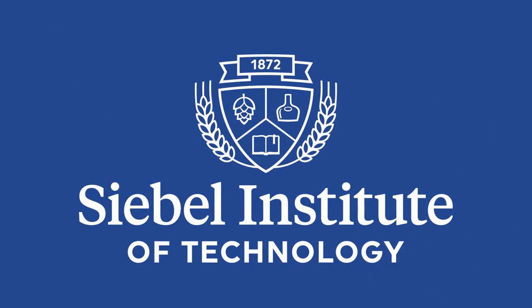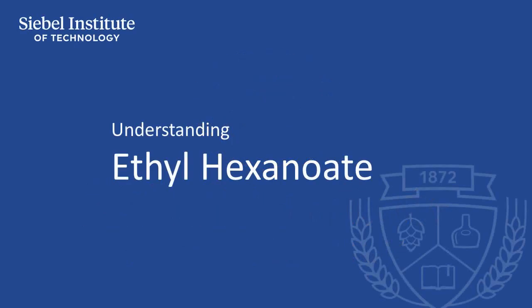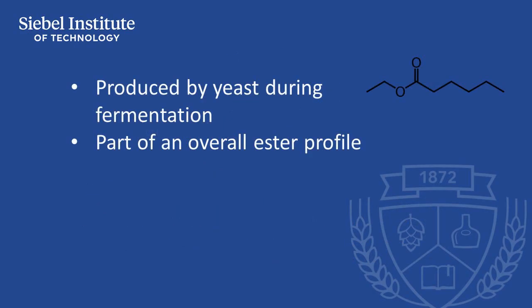Ethyl hexanoate is an ester that's produced by yeast during fermentation, and it's usually found in low concentrations as part of an overall ester profile that gives beer fruity characteristics.